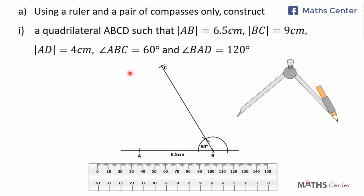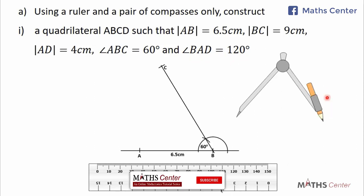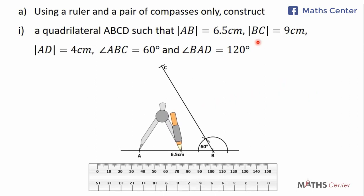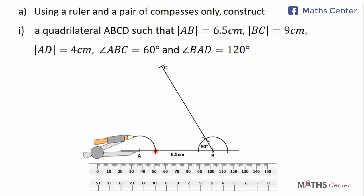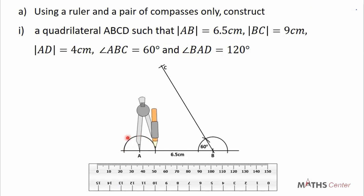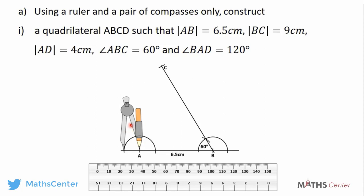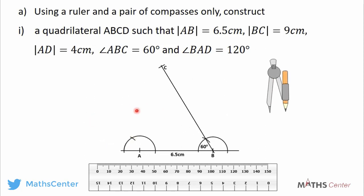Now let's construct the other angle: angle BAD, which is 120 degrees. We are going to construct a 120 degree angle on point A. Move the needle of the compass to point A, adjust it, then turn it and construct a semicircle on line AB using point A as the center. With the same radius, move the needle to the intersection point, turn it and construct an arc to intersect the semicircle. Draw a straight line to join the intersection point to point A — the angle formed at point A is 120 degrees.